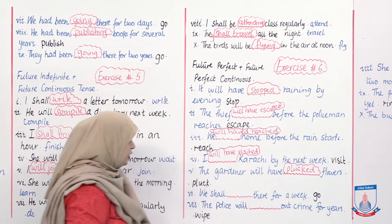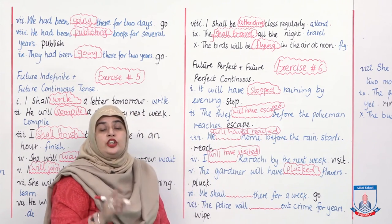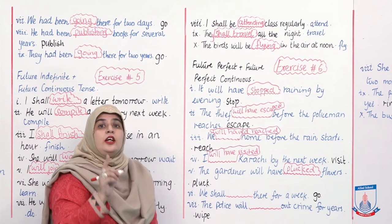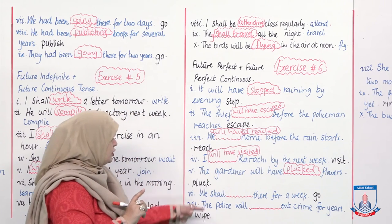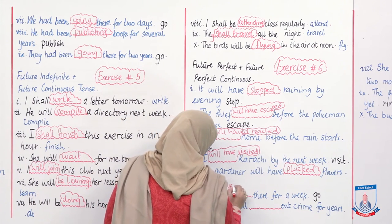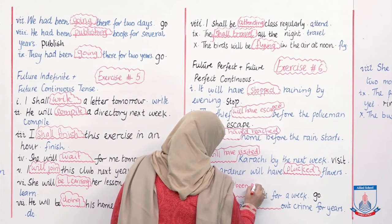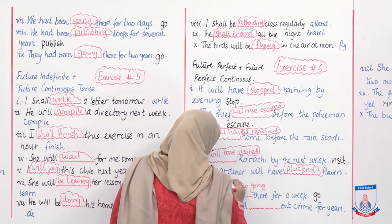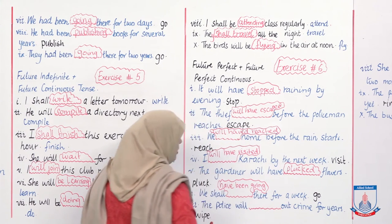'We shall ___ there for a week.' This is something you will have been doing — future perfect continuous. Answer: 'We shall have been going there for a week.' Clear hogaya?